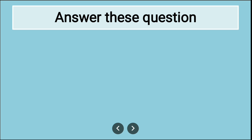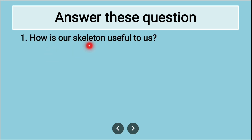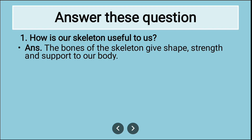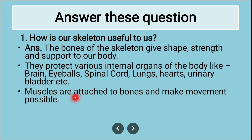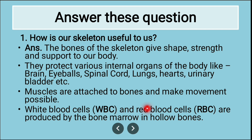Long answers. First: How is our skeleton useful to us? The bones of the skeleton give shape, strength, and support to our body. They protect various internal organs like the brain, eyeballs, spinal cord, lungs, heart, urinary bladder, etc. Muscles are attached to the bones and make movement possible. White blood cells and red blood cells are produced by bone marrow in hollow bones.